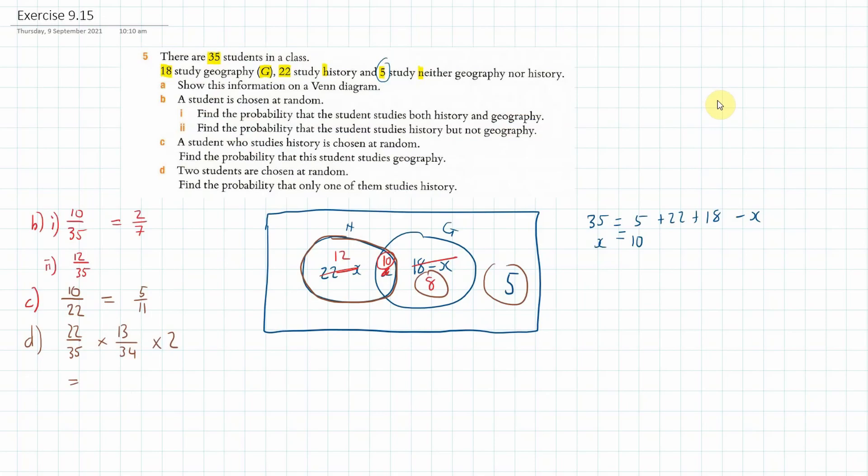And that gives me, I don't know what it gives me, 22 over 35 times 13 over 34 times 2, and that gives me 286 over 595, or 0.481 to three significant figures.